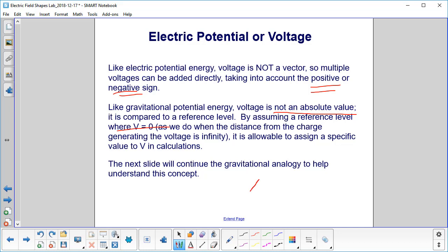So in other words, instead of having to write this all the time for the difference in voltage between two points, we'll have a unique value for that voltage, and we'll just call it V by assuming that V at infinity is equal to zero. Now we're going to put in the gravitational analogy to help understand this concept.